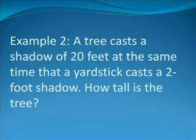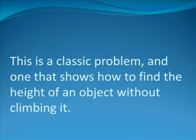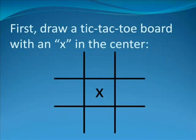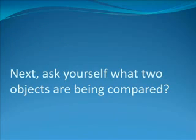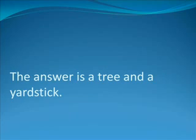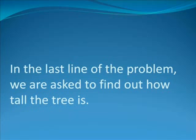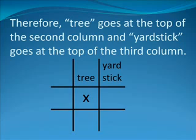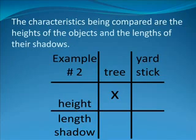Example 2: A tree casts a shadow of 20 feet at the same time that a yardstick casts a 2-foot shadow. How tall is the tree? This is a classic problem, and one that shows how to find the height of an object without climbing it. First, draw a tic-tac-toe board with an X in the center. Next, ask yourself what two objects are being compared. The answer is a tree and a yardstick. In the last line of the problem, we were asked to find out how tall the tree is. Therefore, tree goes at the top of the second column and yardstick goes at the top of the third column.